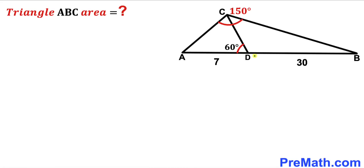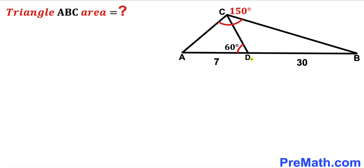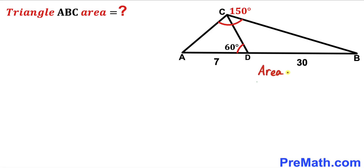Welcome to pre-math. In this video we have got triangle ABC along with segment CD such that angle ACB is 150 degrees, angle ADC is 60 degrees, segment AD is 7 units, and segment BD is 30 units. Our task is to calculate the area of triangle ABC.